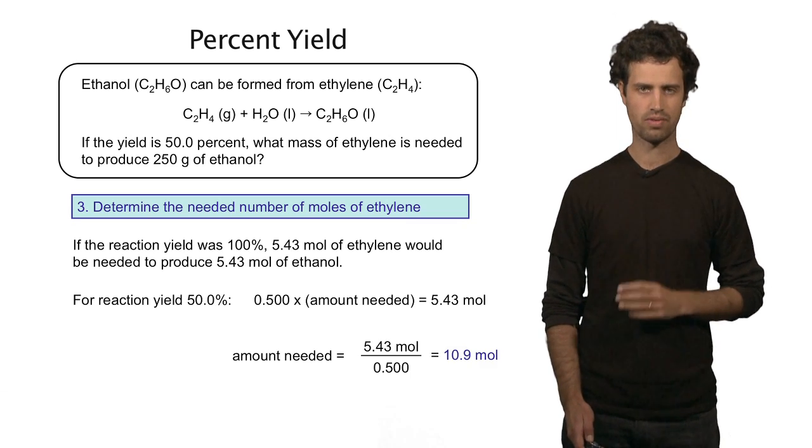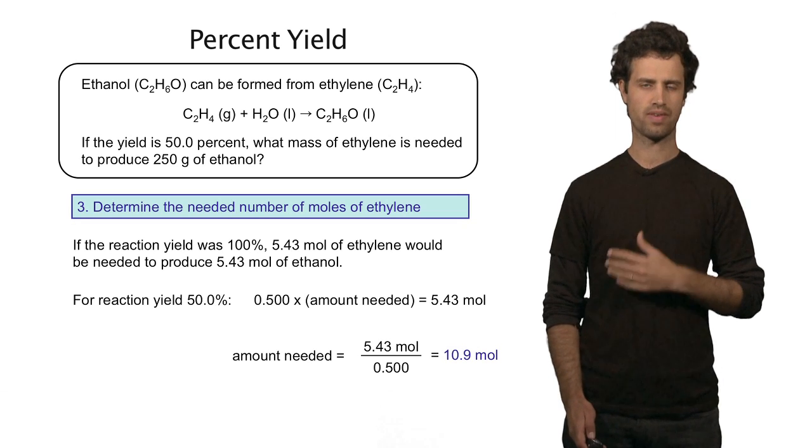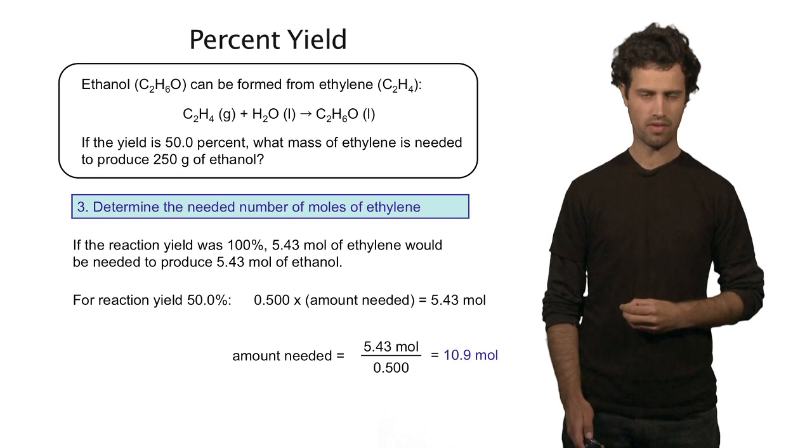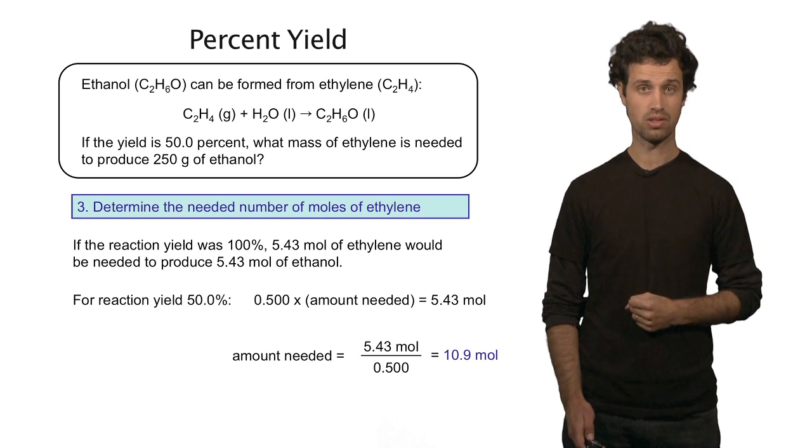I need 10.9 moles of ethylene to get 5.43 moles of ethanol. And that's because the percent yield is 50%.